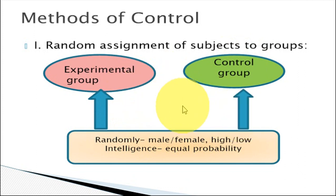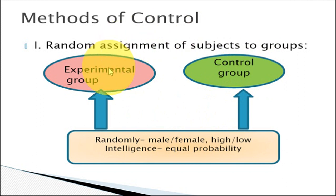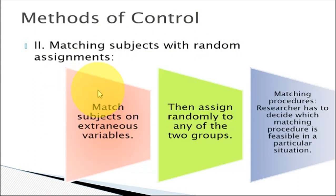In this way, maturation, history, intelligence, and other factors which may affect the experimental research will be controlled to a large extent. So, the first method is random assignment.